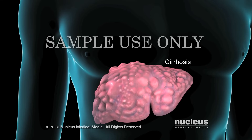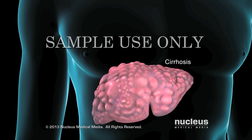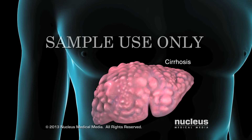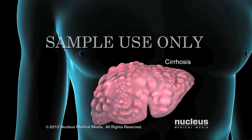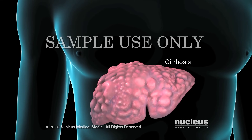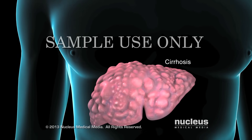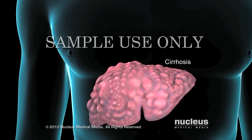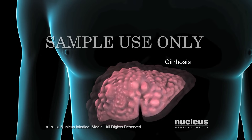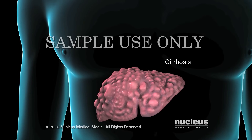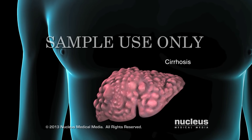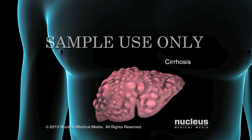If you have a chronic hepatitis B infection, your liver contains a large amount of scar tissue called cirrhosis, which limits blood flow and results in permanent shrinking and hardening of your liver.